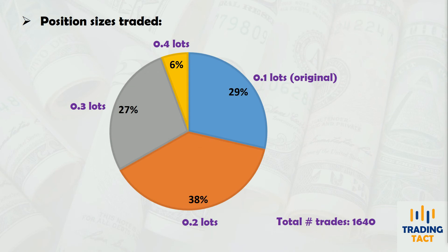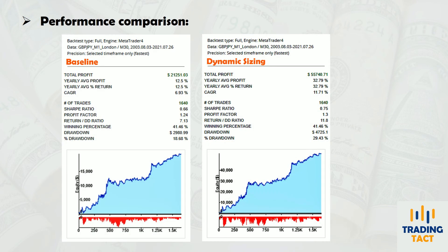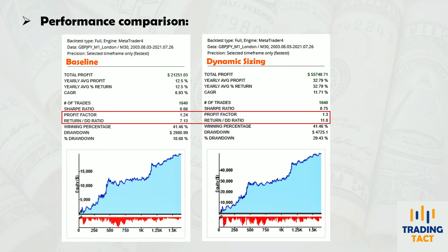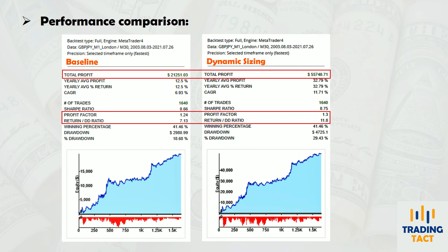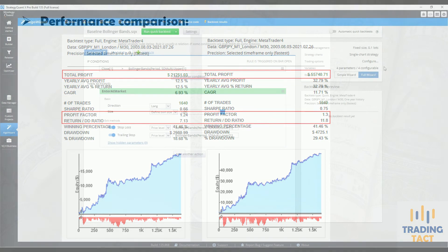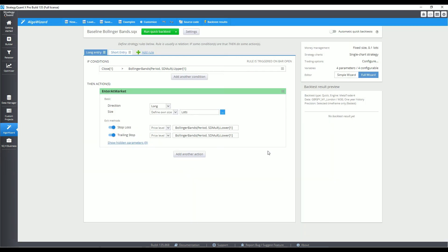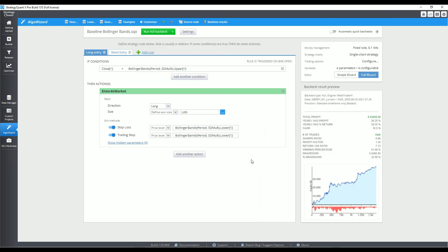Here's the breakdown of the position sizes traded. The equity curve looks very similar because the trade sequence and profits and losses, in pips, are identical. Profit factor has increased from 1.24 to 1.3, while return over drawdown has increased from 7.1 to 11.8. Most notably, net profit has increased 2.5 times from $21,000 to $56,000. Is this simply the result of trading more lots, or did I successfully target the high probability trades? To find out, I computed the average lot size of the above backtest, which came to 0.21 lots. I then retested the original strategy with a fixed 0.21 lots throughout. The net profit was $45,000 in that case.